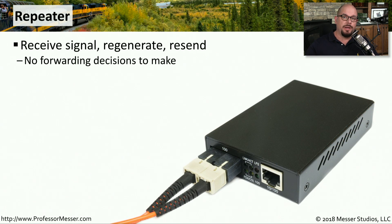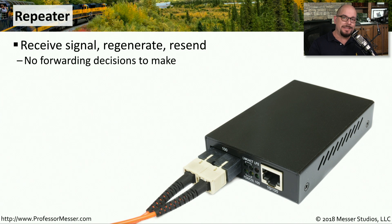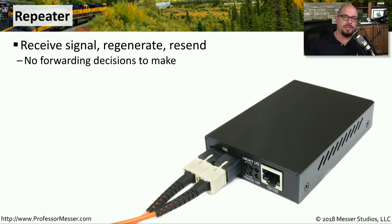If you've ever had to extend a network connection over a very long distance, you know there's a maximum link supported for that particular topology. One way to extend this link is to use a repeater. A repeater receives a signal, regenerates it, and then resends that signal out another interface. It doesn't have to make any forwarding decisions — it's a simple goes-in-one-connection, goes-out-another connection.